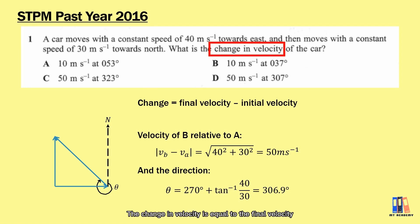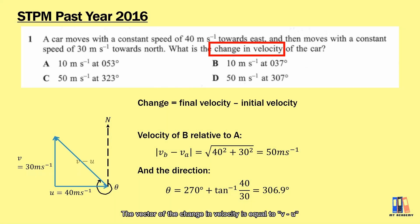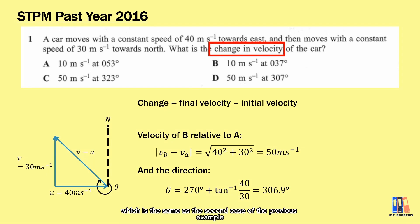The change in velocity is equal to the final velocity, which is 30 meters per second toward north, minus the initial velocity, which is 40 meters per second toward east. So the vector of the change in velocity equals V minus U, which is the same as in the second case of the previous example.